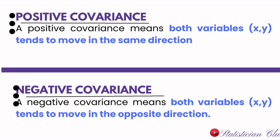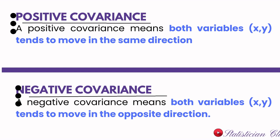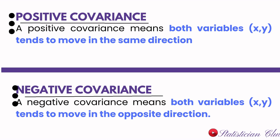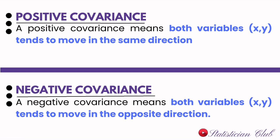Negative covariance means both variables x and y tend to move in the opposite direction. Opposite direction means if one variable increases — suppose x increases — y decreases. In the same direction, by increasing one variable, the other variable also increases, or by decreasing one variable, the other variable also decreases.